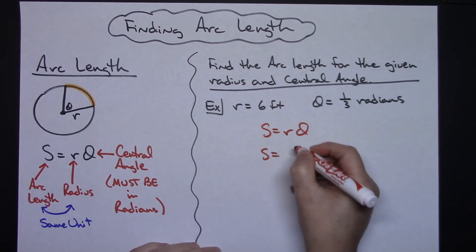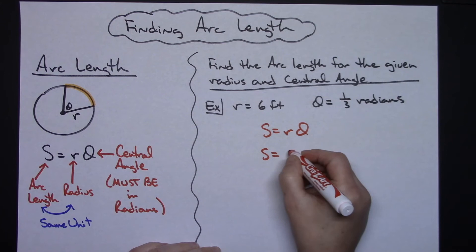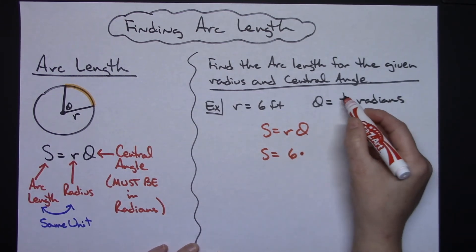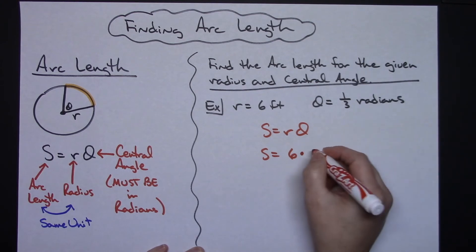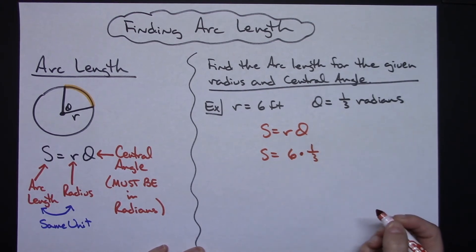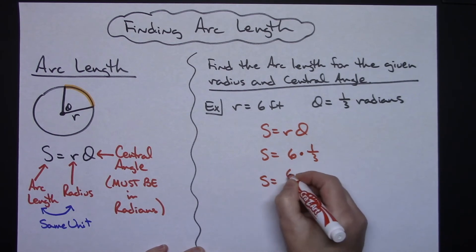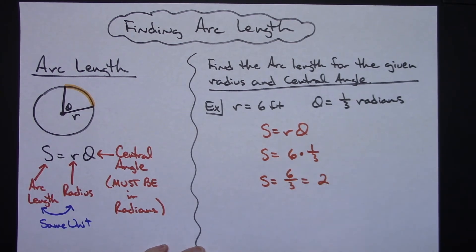S arc length is going to be equal to our radius which is six times our theta, and theta in this case is one-third radians, so times one-third. Six times one-third, depending on how much math you need to do here, six over three is going to be two.